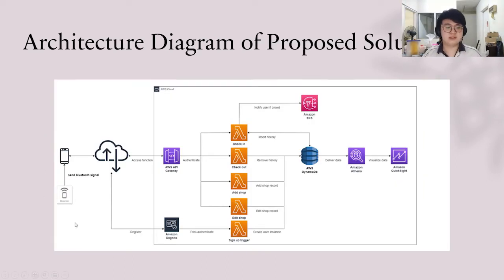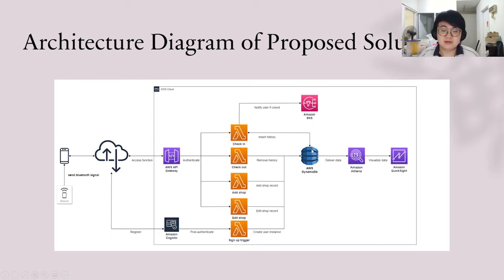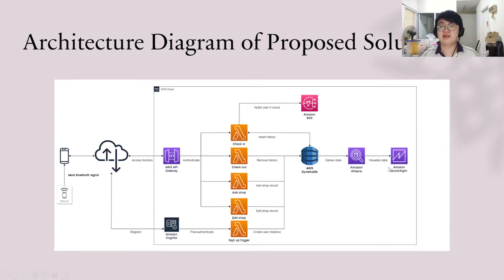I will present the architecture diagram for the proposed solution. We have a beacon to send a Bluetooth signal to the phone, which connects to the internet and to the API Gateway. We use Amazon Cognito to help users authenticate or register new users. When users authenticate, a sign-up trigger creates a user instance in the user table to store the username and check-in history. The check-in function checks if the shop has exceeded 10 users. Amazon SNS will send an email notification to the shop owner when the maximum user count is exceeded. The check-in function also records the username in the storeDB database. The add shop function creates a DynamoDB instance, and the edit shop function modifies shop attributes. Amazon Athena takes data from DynamoDB and puts it into Amazon QuickSight so the shop owner can visualize check-in activity.